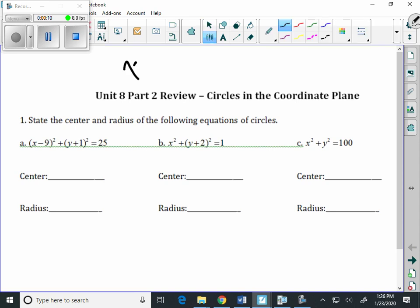I just want to remind you that (x minus h) squared plus (y minus k) squared equals r squared